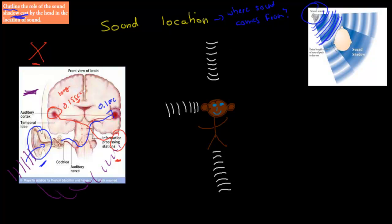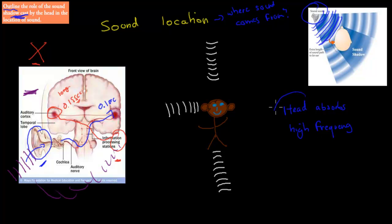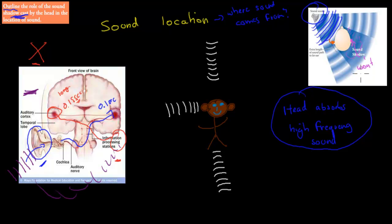The sound will be absorbed by the near ear, so some of it goes into that ear and causes hearing. But importantly, especially for high-frequency sounds — our head, our skull, absorbs high-frequency sounds. High-frequency sounds are often the ones we use for communication. So our head absorbs these high-frequency sounds, which means the sound only gets into the near ear. The rest has been absorbed, so on the other side there's nothing — the sound hasn't passed through the skull, meaning the other ear won't be activated.